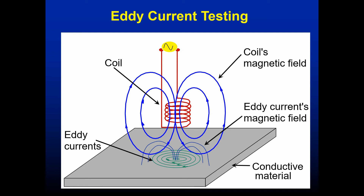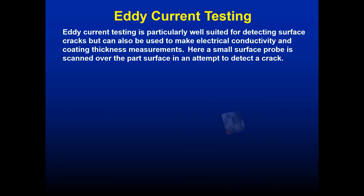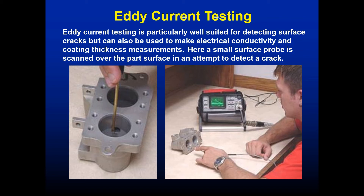By looking at variations in the eddy currents' magnetic field we can determine conductivity, material thickness, coating thickness, temperature ranges, and the presence of defects. Eddy current is particularly well-suited for detecting surface cracks. In one common configuration, a small surface probe is scanned over the part surface in an attempt to detect a crack.